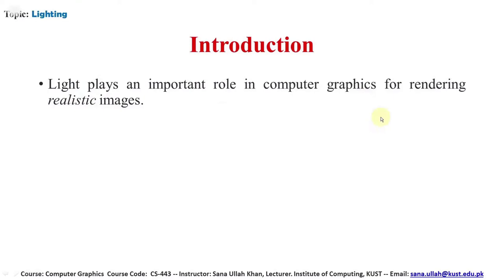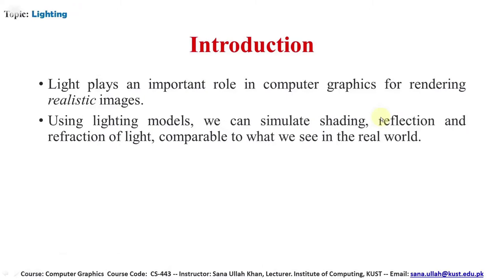The main purpose of lighting in computer graphics is for rendering realistic images — so the 3D model in the real world will look like the 3D model in the computer. Using a lighting model we can simulate shading, reflection, and refraction of light. Shading means the effect which renders the colors of the surface. Reflection is when the reflected ray lies in the plane defined by the incident ray and the surface normal, while refraction is defined as the change in direction of travel as light passes from one medium to another.